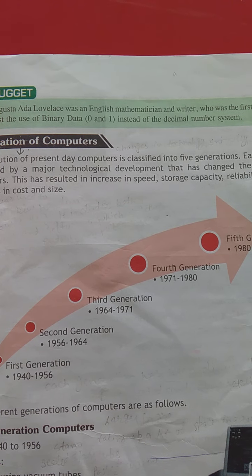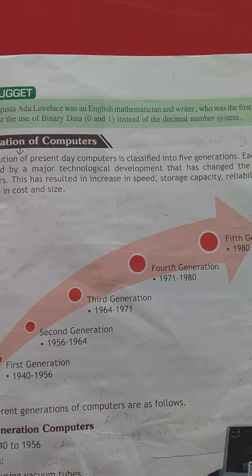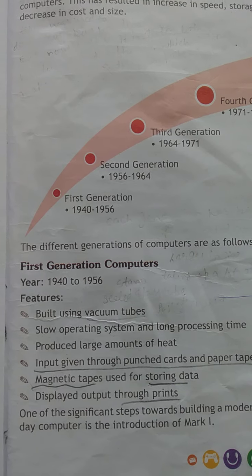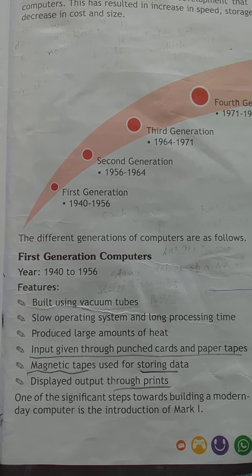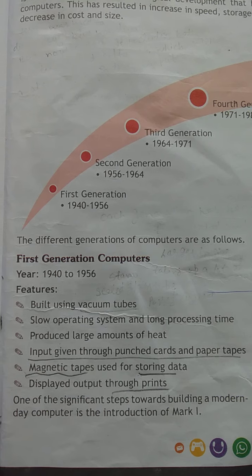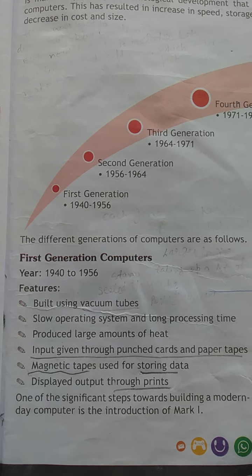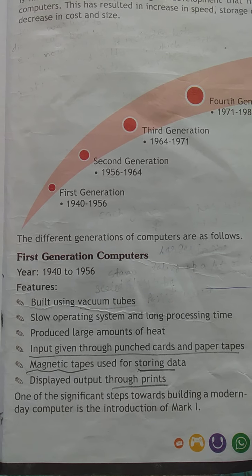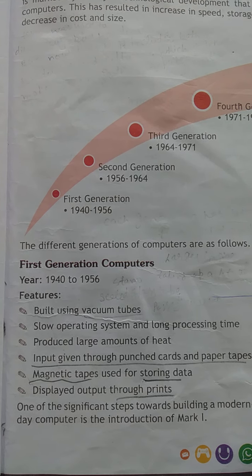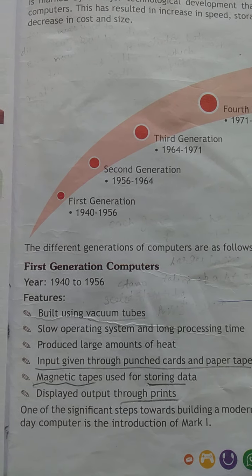Now we explain the first generation computer. The first generation's time period is 1940 to 1956 — this is the development time period.